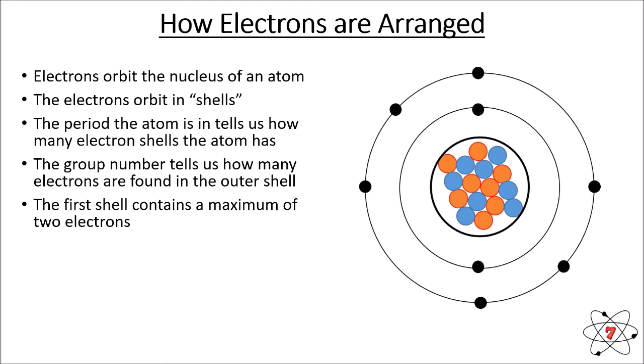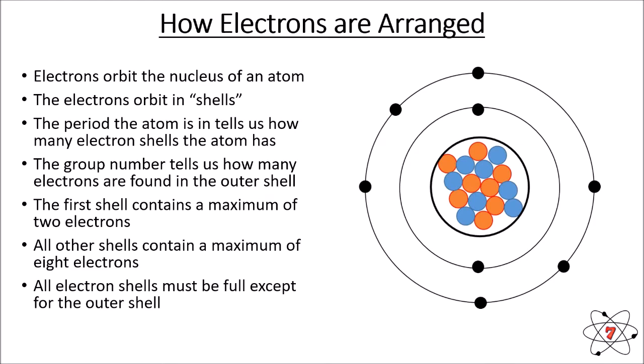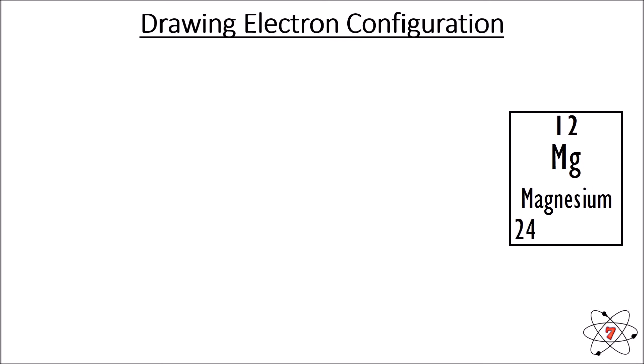The first electron shell contains a maximum of two electrons — it cannot contain any more than two. This is why helium only has two electrons in its outer shell: helium only has one electron shell, so it can only contain a maximum of two electrons. Helium also has two protons, so it has two electrons as well. All other shells contain a maximum of eight electrons, and all electron shells must be completely full except for the outer shell — only the outer shell is allowed to have any empty spaces.